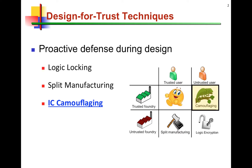IC camouflaging assumes that the foundry is trusted, so we may talk about a scenario where we have a fab — like a very large, well-established fab such as TSMC that we've been working with for a very long time. So we trust them, but we do not trust the users or devices that our chips will go into. These users can potentially reverse engineer the chip and recover the design details, so IC camouflaging is a solution that would protect against such untrusted end users.